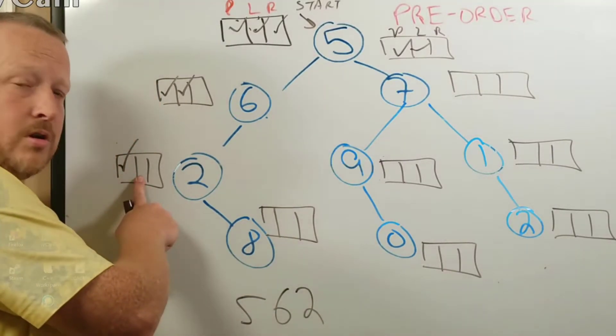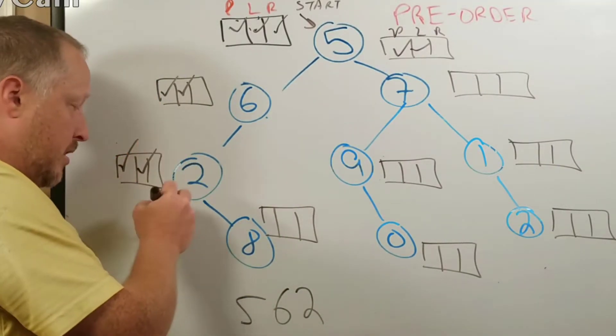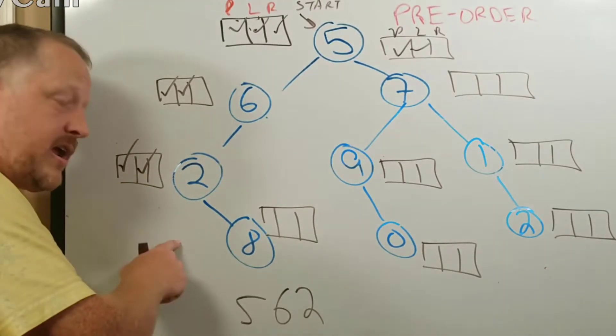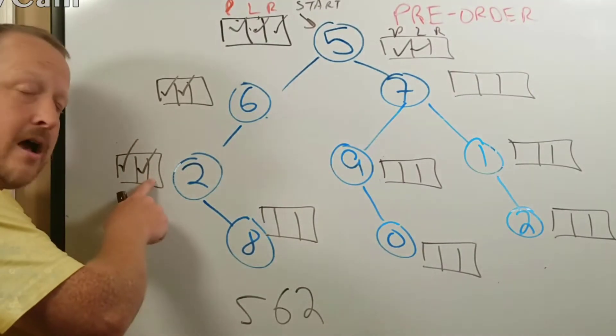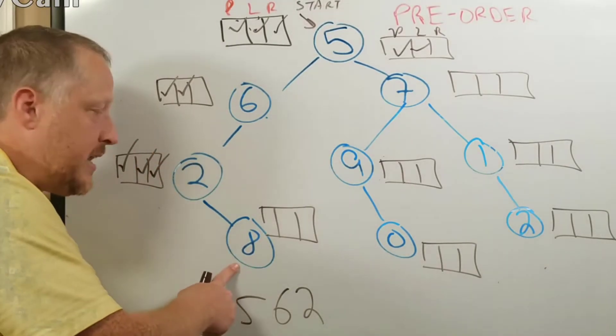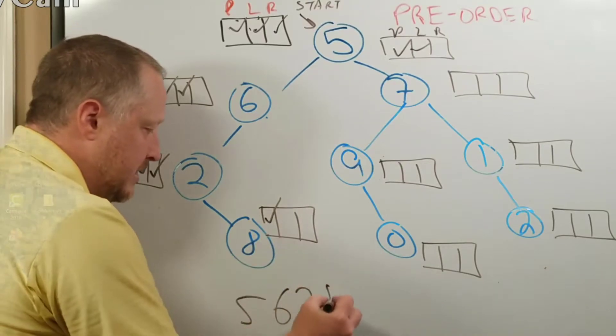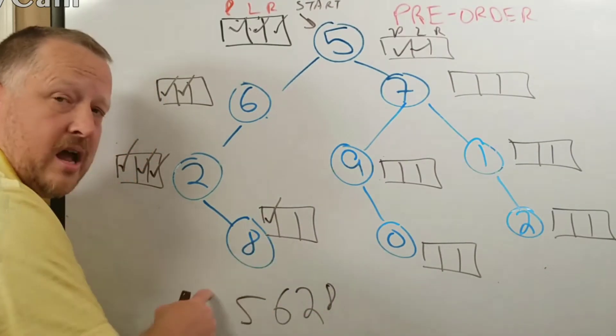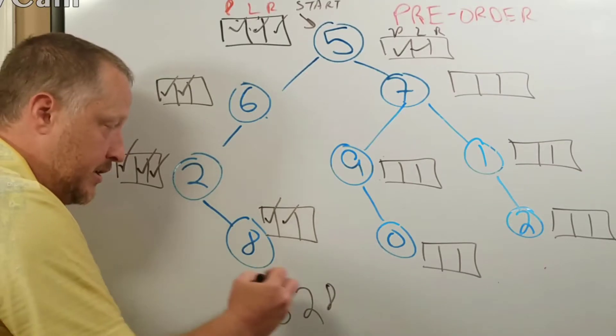At two, I'm going to then go to the left. Well, I'm going to try to go left, but there's nothing there. But I still tried at least. So now I check out the right. So the right is eight. I'm going to go ahead and process. I try to go left, can't do it. Try to go right, can't do it.